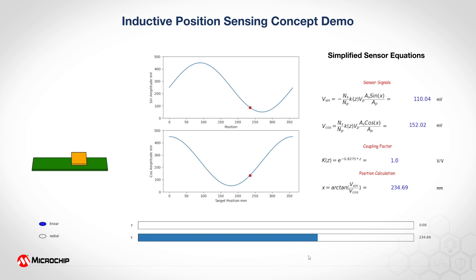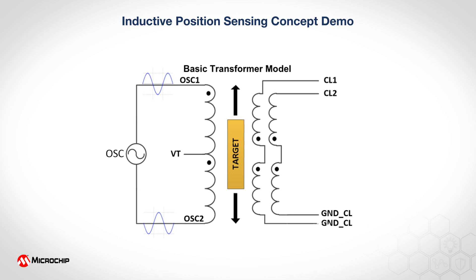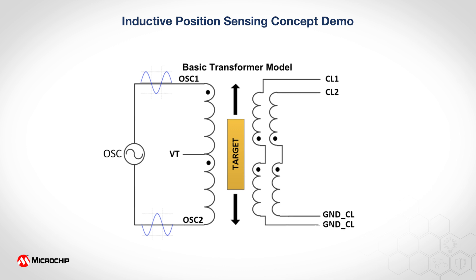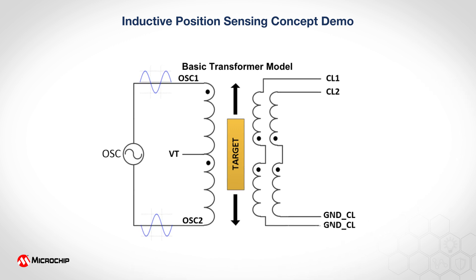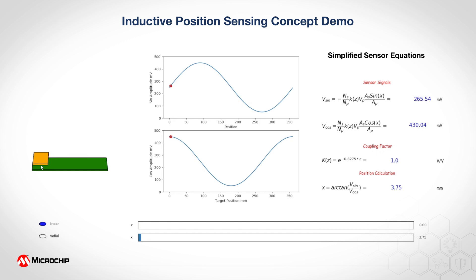Inductive position sensors are unique in their own ways that they almost act like transformers. So the presence of the metal target we introduced here basically becomes a disturbance between the magnetic coupling between the primary side of the transformer to the secondary side of the transformer, and the output of the secondary transformer is what we're going to take in to our sensor IC.